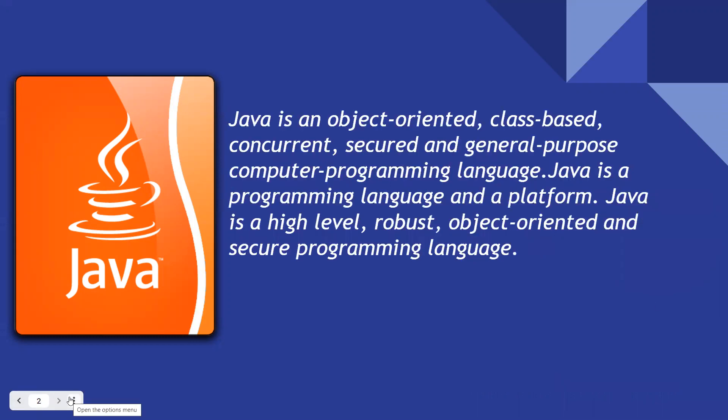A formal definition: you can consider Java as an object-oriented, class-based, concurrent, secured, and general-purpose computer programming language.